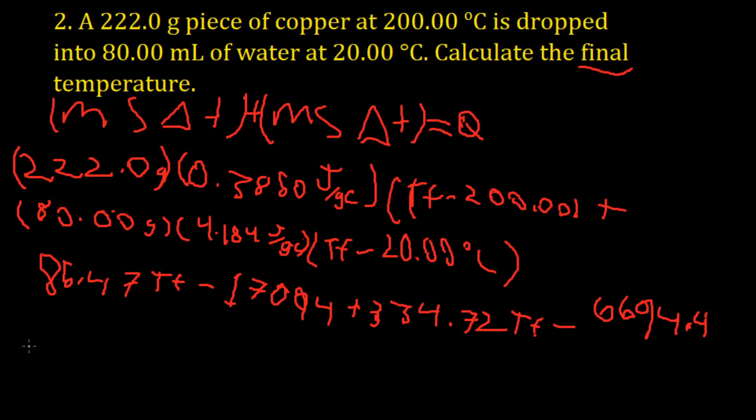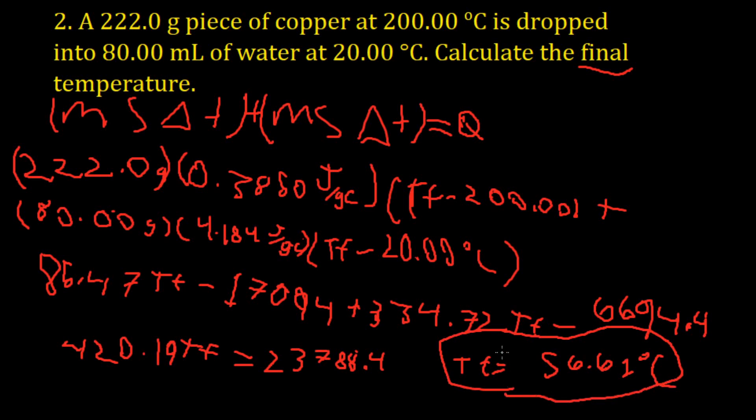So when you add the tf's together, it will be equal to 420.19 tf. And when you put these two numbers on the other side, they will become positive and will become 23,788.4. And when you divide this number by this number, you get tf. And tf will be equal to 56.61 degrees Celsius, which is the final temperature of both water and copper in this situation.